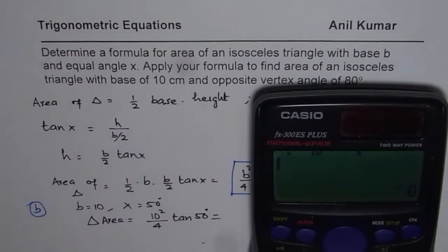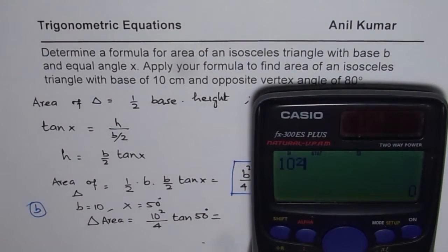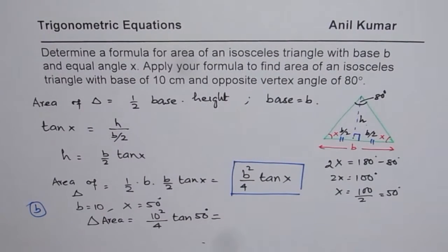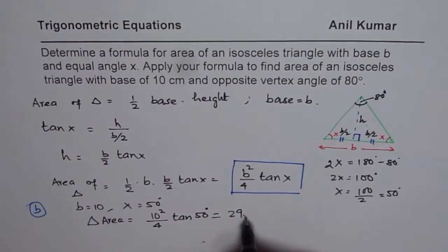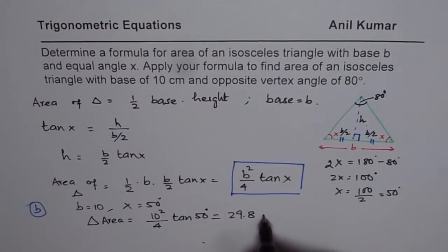So we have 10 squared divided by 4 which is 25 times tan of 50 degrees. Approximately 29.79. So we can write this as 29.8 units square.